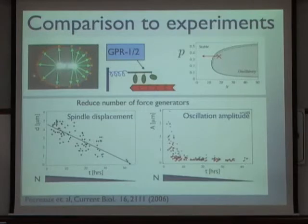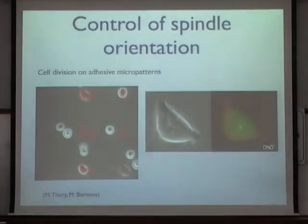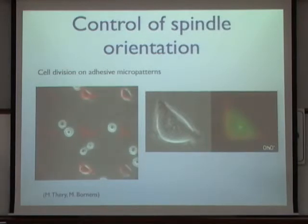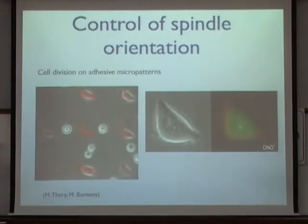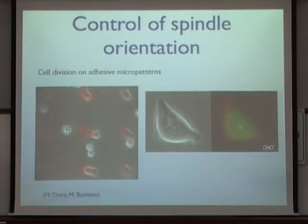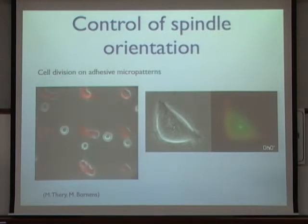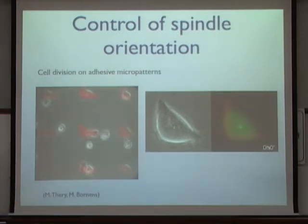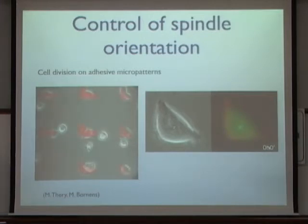This was an example about spindle displacement and asymmetric cell division. I'd now like to discuss spindle orientation and show that the same cortical force generators that pull the spindle to the side are also involved in spindle rotation and orientation. This can be studied in a particular experimental situation.